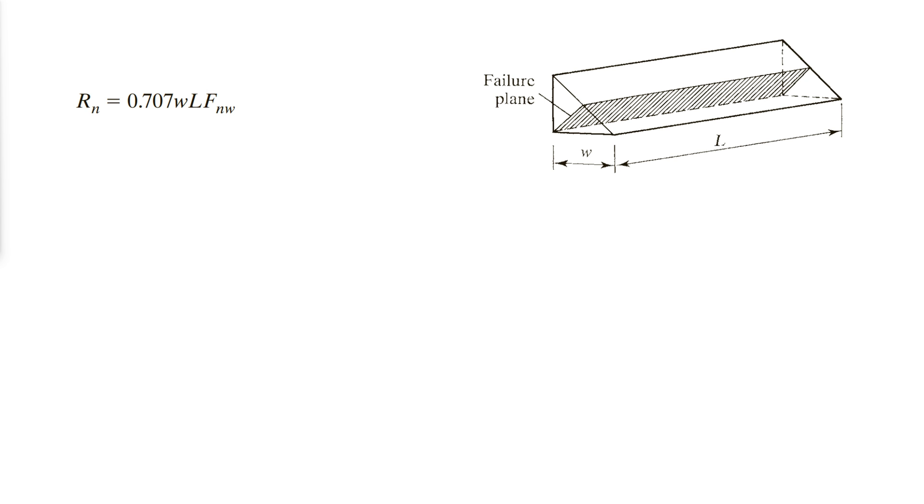The strength of a fillet weld depends on the weld metal used. It is a function of the type of electrode. The strength of the electrode is defined as its ultimate tensile strength, with strengths of 60 to 120 kips per square inch available for the shielded metal arc welding process.